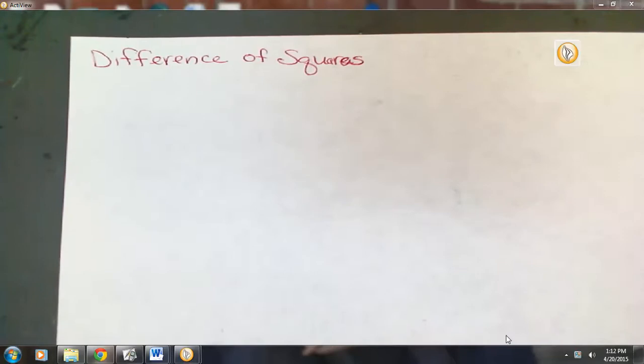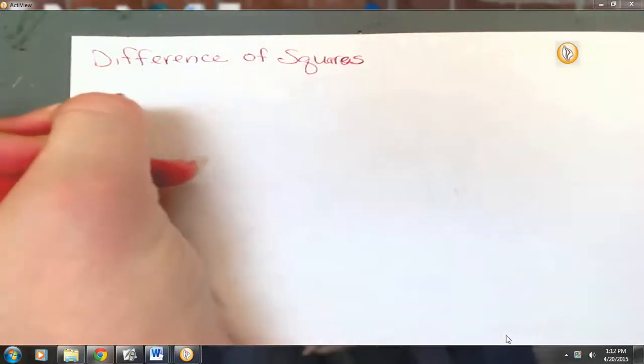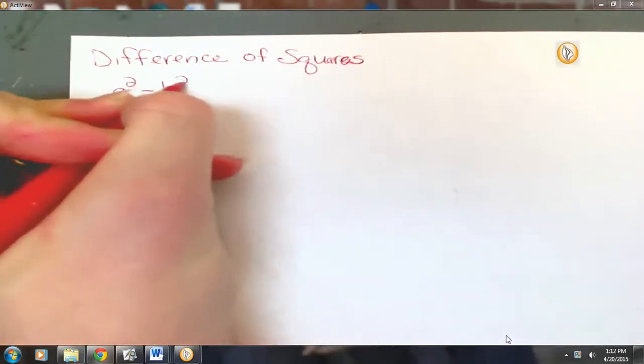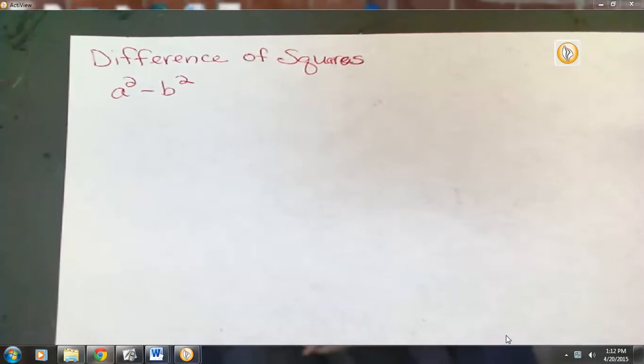I want to show you so that if something like this does arise in the EOC, you at least have seen it. You always have an idea of how you might factor it. To factor using difference of squares, first of all, our problem may look like that: a squared minus b squared.